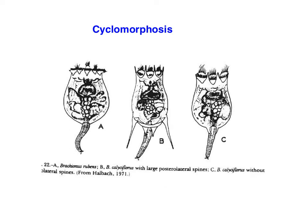In this talk, I want to discuss some interesting features of rotifers. One is that many species can exhibit a phenomenon known as cyclomorphosis. As the name implies — 'morphosis' meaning a change in form — this can occur in a cyclical way.